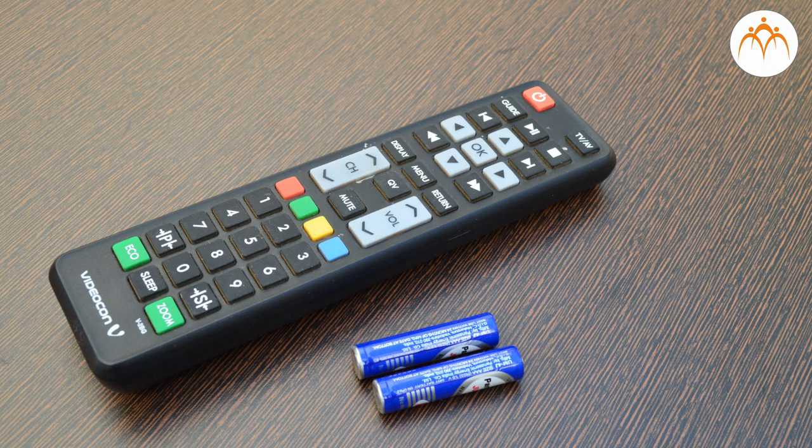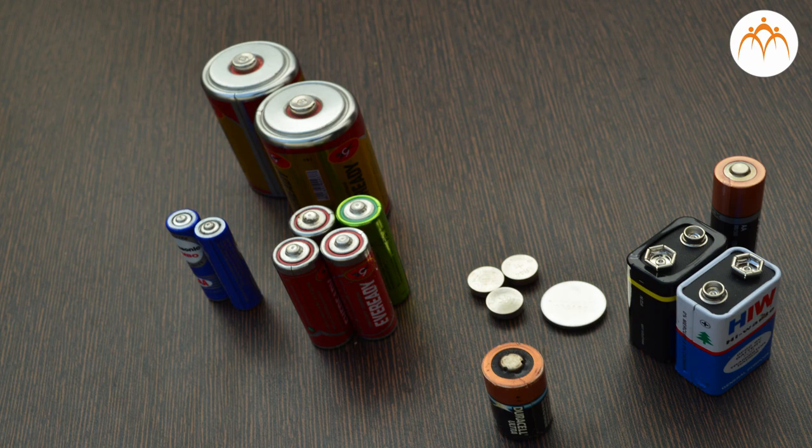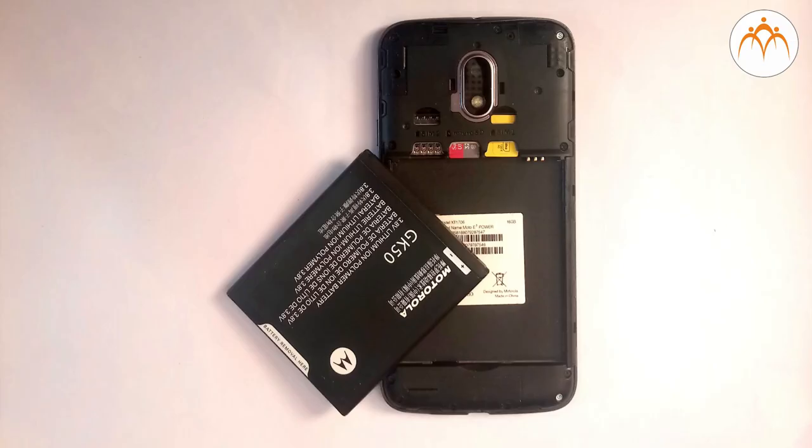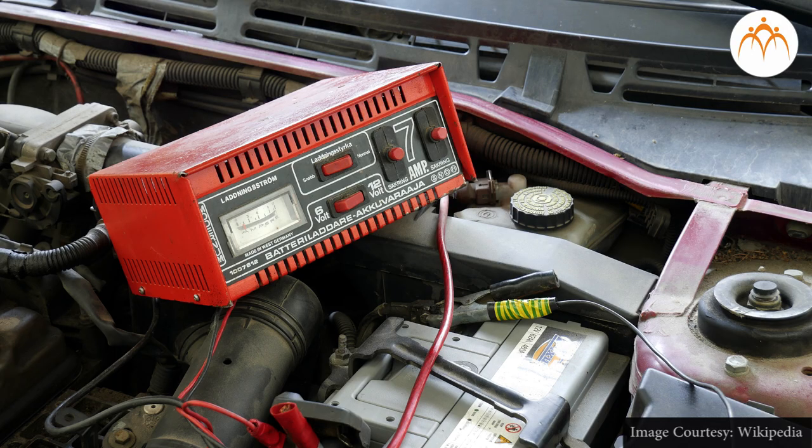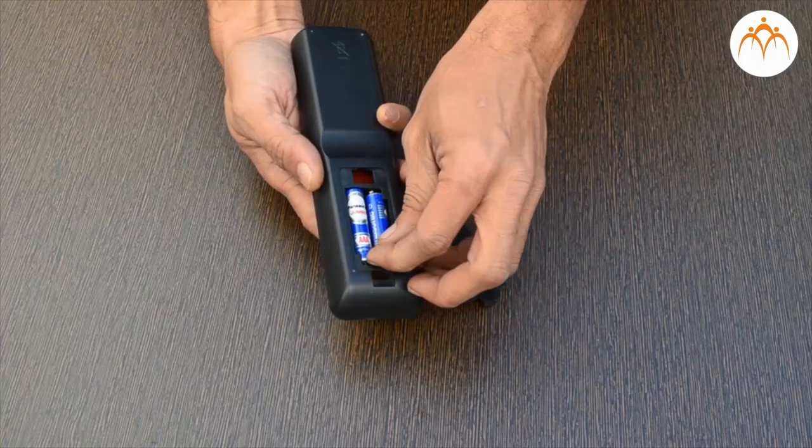A battery is a device consisting of one or more electrochemical cells with external connections provided to power electrical devices. Batteries come in many shapes and sizes, from miniature cells used in wristwatches to small thin cells used in smartphones, to large lead acid batteries or lithium-ion batteries in vehicles.